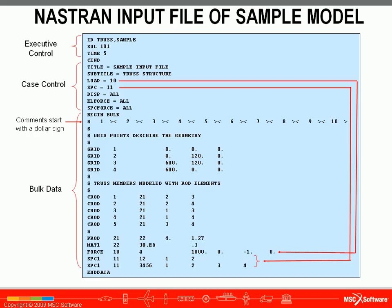Note how these are separated into the small field format where each field is 8 characters wide. Comments start with a dollar sign. The first row of comments shows where the columns are, as a helpful reference so we can verify that data is in the appropriate fields. Other comments identify what certain sections of the file are doing. We create our nodes, elements, PROD element properties, material properties, and loads and boundary conditions, before the END DATA entry which signifies the end of the file.